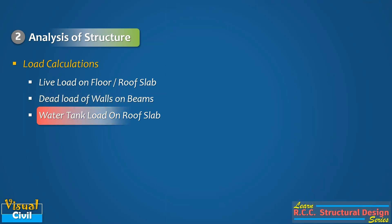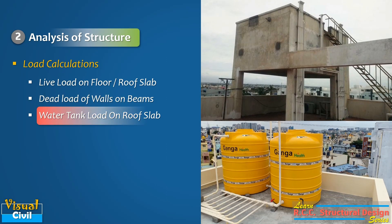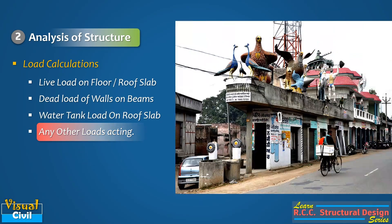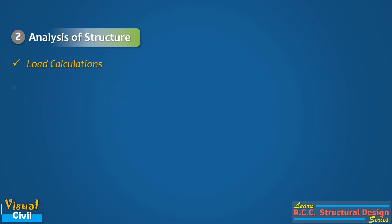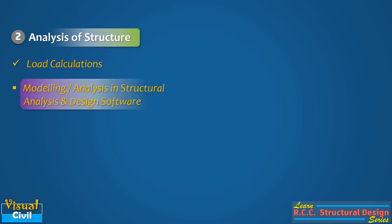We also need to calculate the water tank load on the roof slab, which depends on the type and material of the tank. Any other loading coming on the structure must also be considered in the load calculations. The next step in analysis of structure is mathematical modeling and analysis of the building in structural analysis and design software. There are many softwares available for this purpose, out of which STAAD Pro and ETABS are widely used.